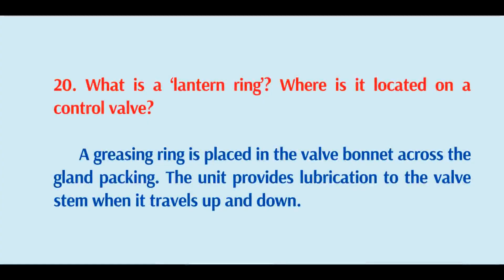What is a lantern ring and where is it located on a control valve? A greasing ring placed in the valve bonnet across the gland packing. The lantern ring provides lubrication to the valve stem when it travels up and down.